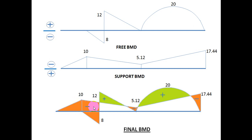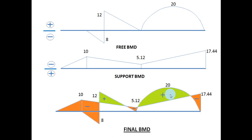Finally, here — suppose this value is 12, which is the total positive part. From this positive part, this much negative part must be subtracted, giving us the remaining positive moment. This is the final bending moment diagram — the green portion shows the positive moment and the orange portion shows the negative bending moment. Likewise, you get the final bending moment diagram.